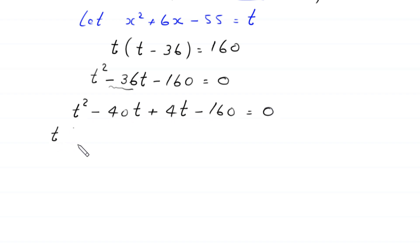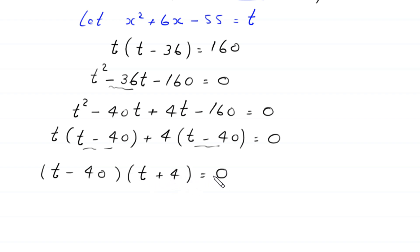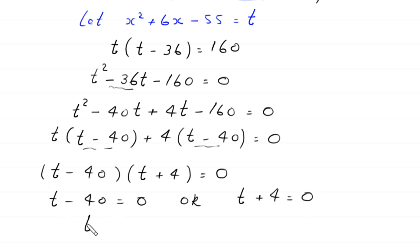From the first two terms we can factor out t, and from the last two terms we can factor out plus 4. This gives t minus 40 in brackets times t plus 4 is equal to 0. So either t minus 40 is equal to 0, giving t is equal to 40, or t plus 4 is equal to 0, giving t is equal to negative 4.